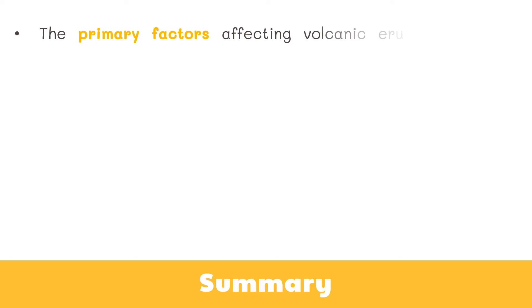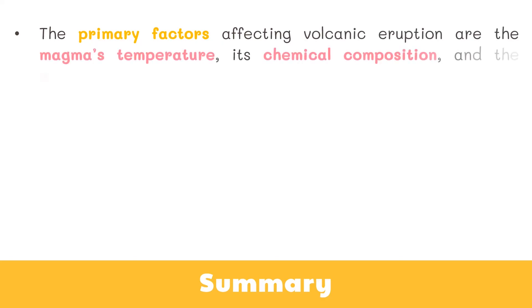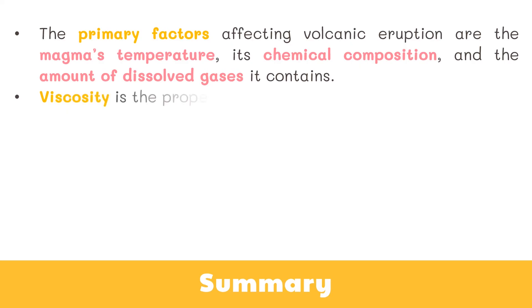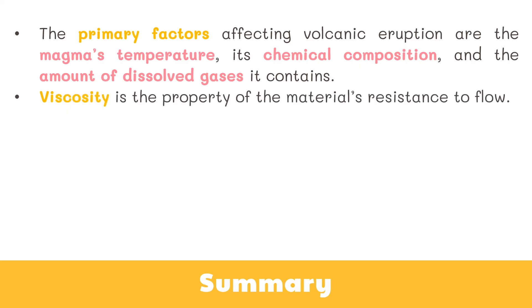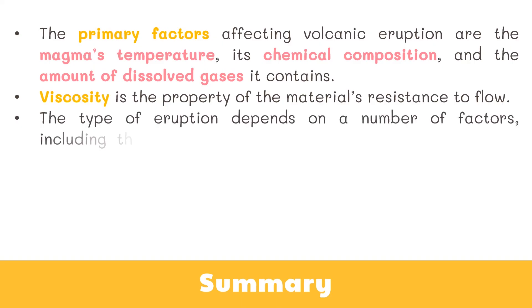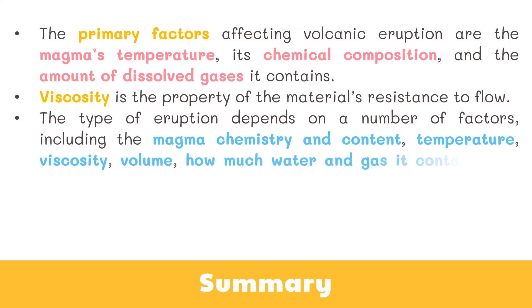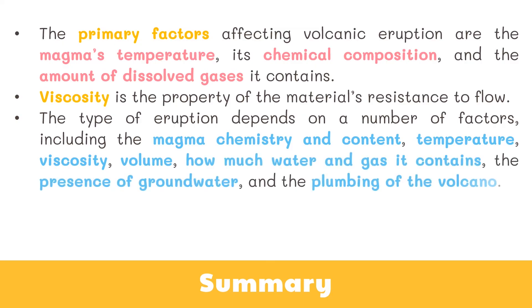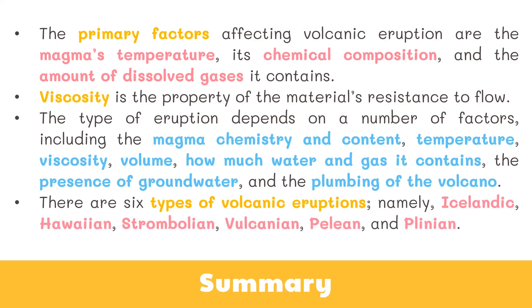To wrap things up: the primary factors affecting volcanic eruption are the magma's temperature, its chemical composition, and the amount of dissolved gases it contains. Viscosity is the property of a material's resistance to flow. The type of eruption depends on magma chemistry, temperature, viscosity, volume, water and gas content, groundwater presence, and the plumbing of the volcano. There are six types of volcanic eruptions: Icelandic, Hawaiian, Strombolian, Volcanian, Pelean, and Plinian.